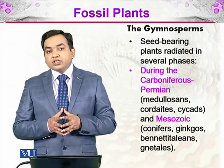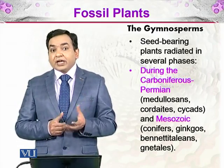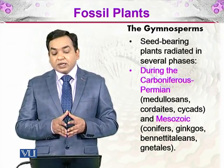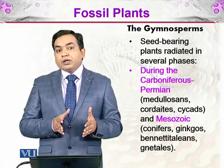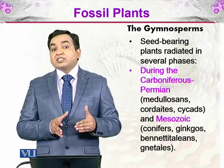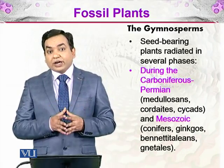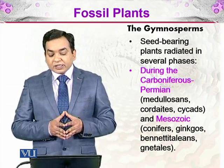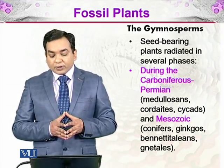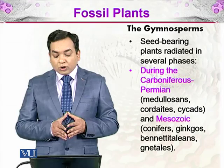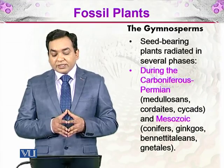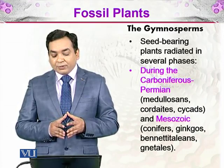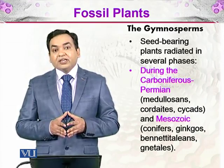Then come the gymnosperms. Gymno means naked and sperm means seed, so these are seed-bearing plants whose seeds are naked — that is why we call them gymnosperms. They radiated in several phases during the Carboniferous and Permian. There were medullosans, cordaites, cycads, and Mesozoic conifers, ginkgos, bennettitaleans, and Nittales.